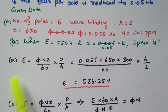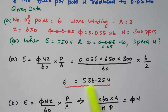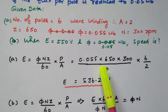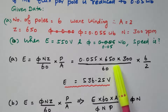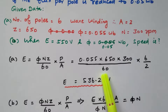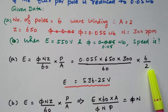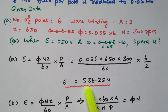For the first part, all data are available and we need to find the EMF. Using the formula: E equals phi times N times Z divided by 60, into P by A. The flux is 0.055, number of conductors is 650, speed is 300, divided by 60, number of poles is 6, number of parallel paths is 2. By simplifying, the induced EMF is 536.25 volts.